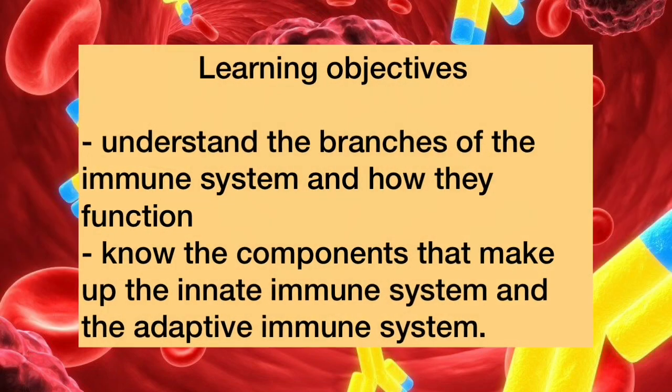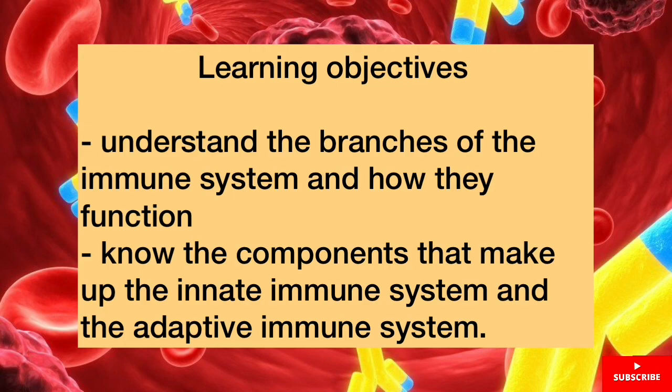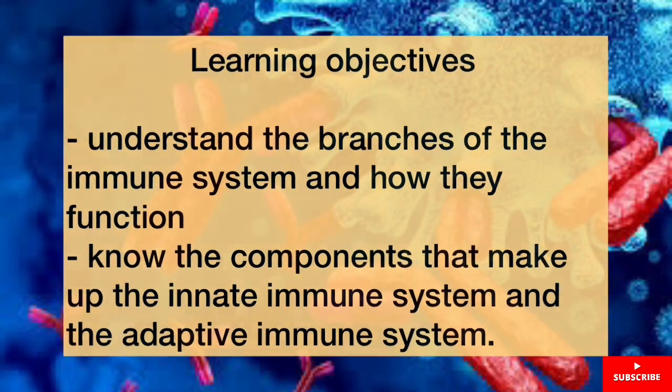The main learning objectives are: firstly, to understand the branches of the immune system and how they function; and secondly, to know the components that make up the innate immune system and the adaptive immune system.